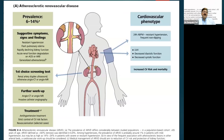Atherosclerotic renal vascular disease has a prevalence of 6 to 14%. Diagnosis starts with a renal artery Doppler, and CT angiography or MR angiography may be required. Treatment includes antihypertensive medications and strict cardiovascular risk factor control. For tight renal artery stenosis, angioplasty or stenting may be required, followed by ongoing management to avoid cardiovascular mortality.